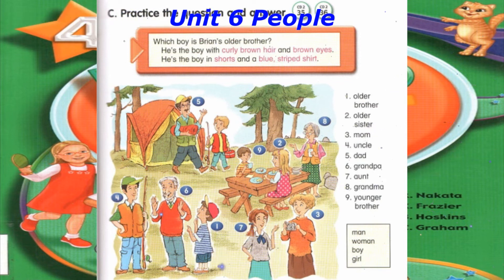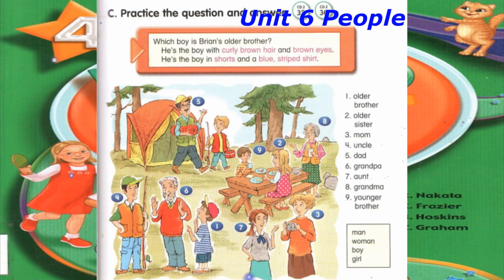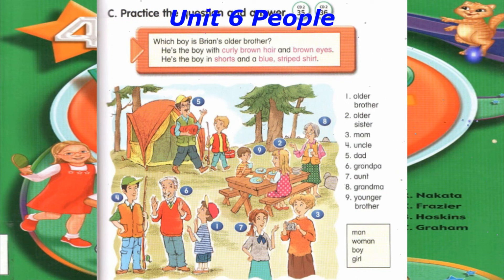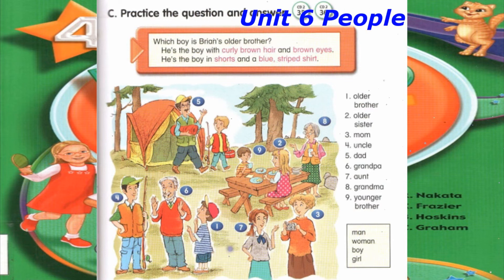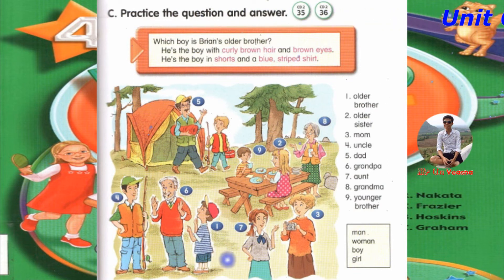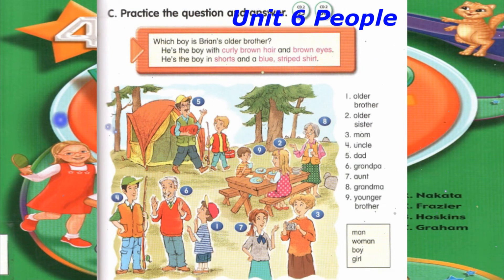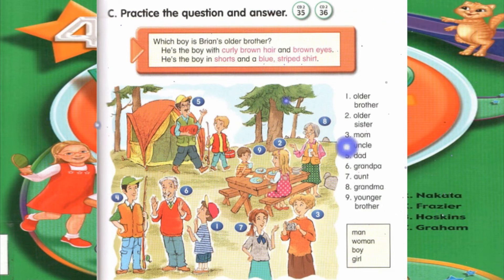Number 5: Which man is Brian's dad? He's the man with curly brown hair and blue eyes. He's the man in glasses and a yellow baseball cap. Number 6: Which man is Brian's grandpa? He's the man with gray hair and a mustache. He's the man in the shirt, tie, and sweater.